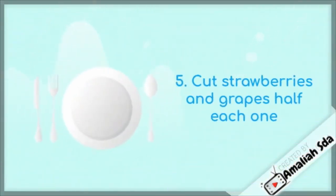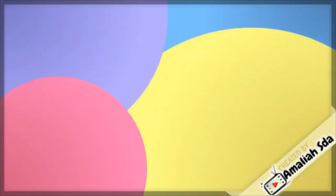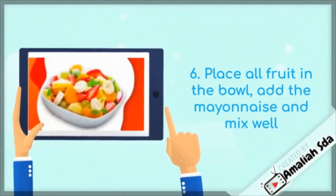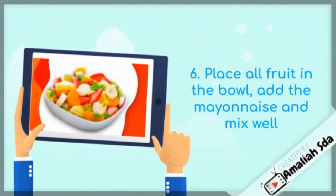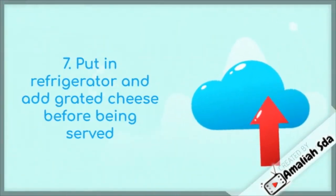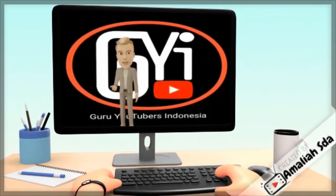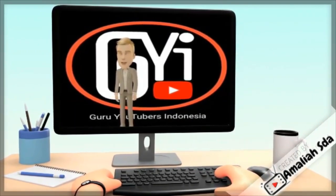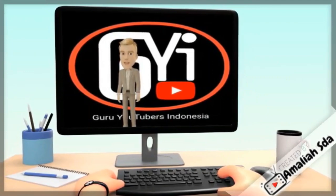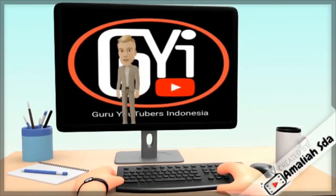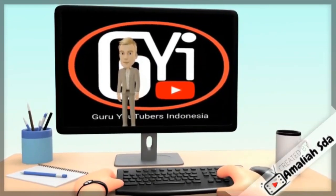For strawberries and grapes, cut them in half each one. Next, place all fruits in the bowl, add the mayonnaise and mix well. Finally, put in refrigerator and add grated cheese before being served. If you don't understand yet, replay the video. Don't forget to subscribe and like. Thank you.